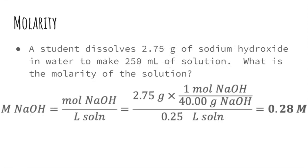To find the molarity of this solution, we'll need to find moles of sodium hydroxide using the molar mass of NaOH, which is 40.00 grams per mole. Upside down, that molar mass is a conversion factor from grams to moles.